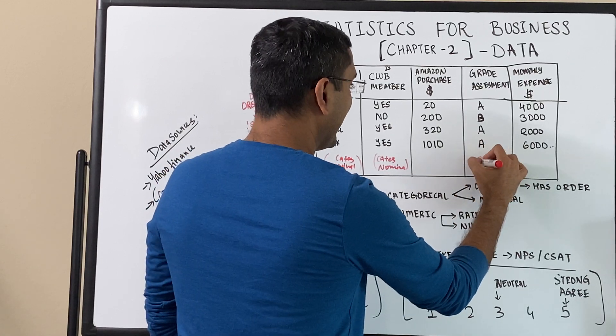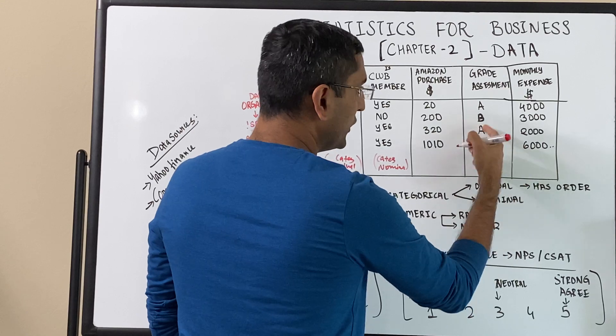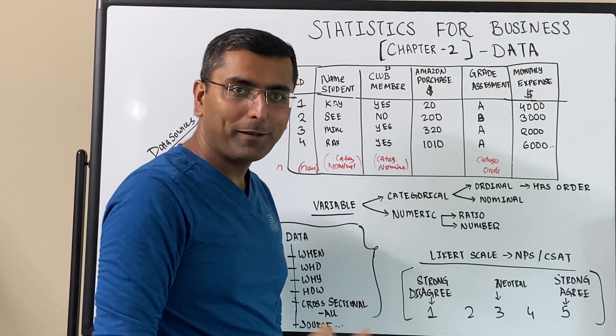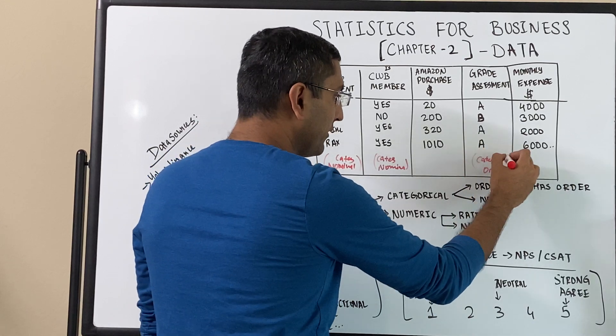Grade is that one. Grade is categorical variable that is ordinal. You can easily say, hey, getting a grade A is better than grading at grade B. So this is a categorical variable as ordinal.